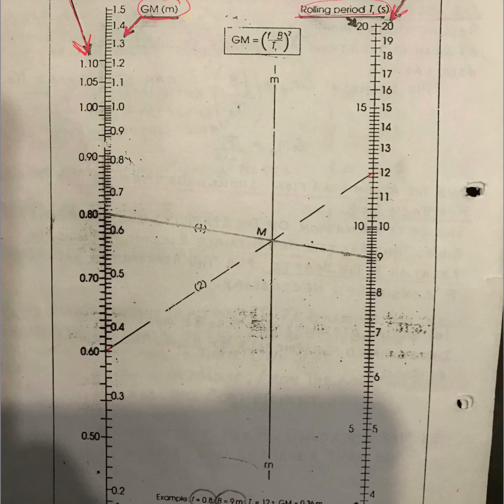On your right hand side you have the breadth scale given to you, and you have your rolling period scale given as well. The instructions for using this are given below in the diagram.